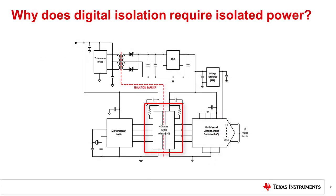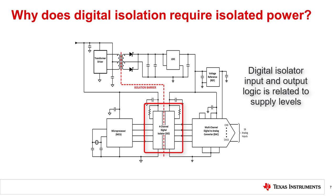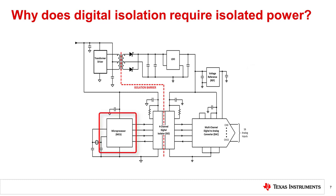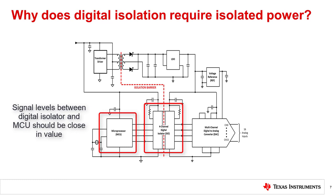The input and output signal voltages of a digital isolator are dependent on supply voltages VCC1 and VCC2. The exact relationship to VCC will vary from device to device. To ensure that the output of the digital isolator is optimized for the logic levels of interfacing components, it is recommended to keep supplies similar to the isolated power supply voltage. When using a digital isolator powered with 5 volts interfaced to an MCU, it is important that the MCU signals are also operating at 5 volt logic levels.